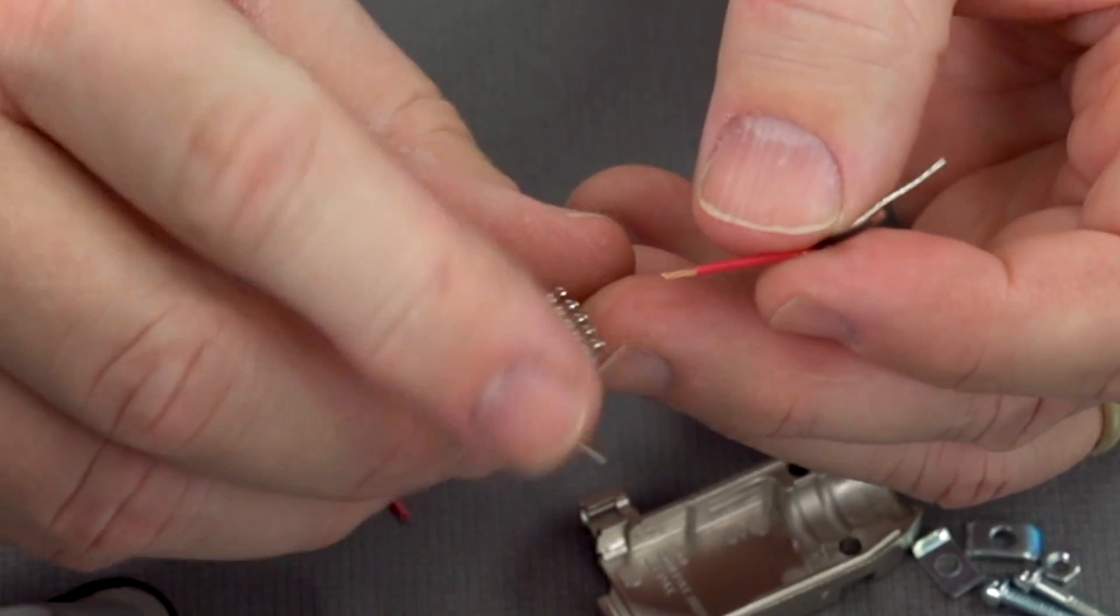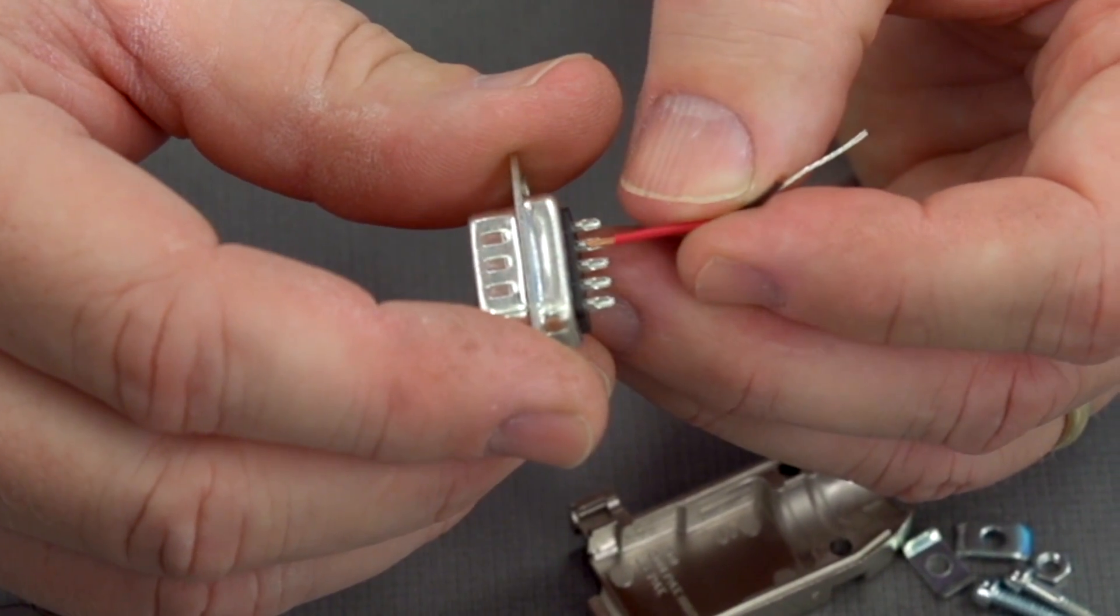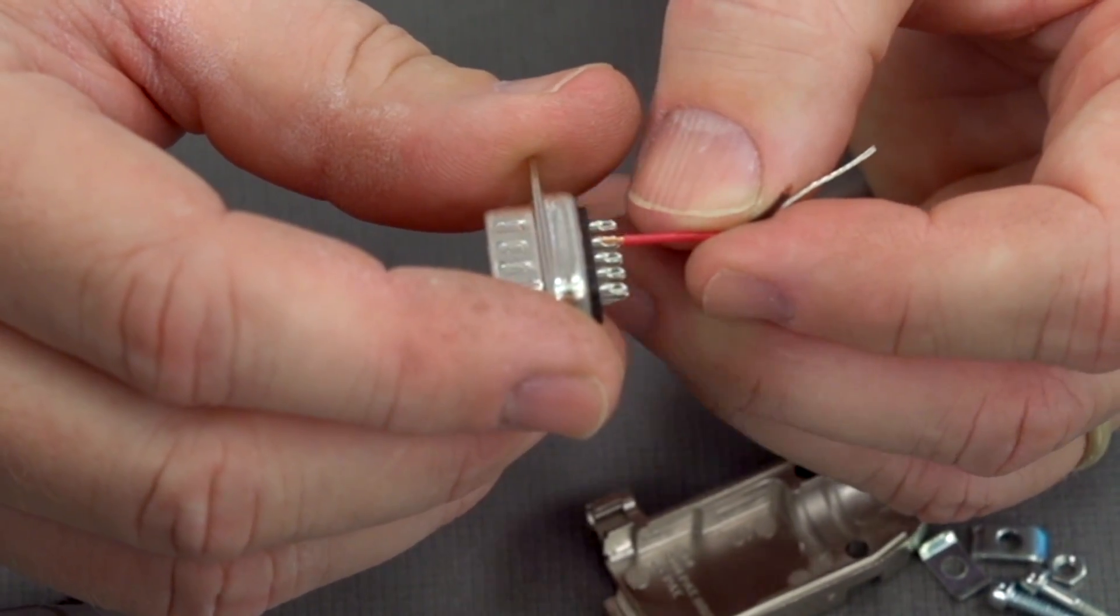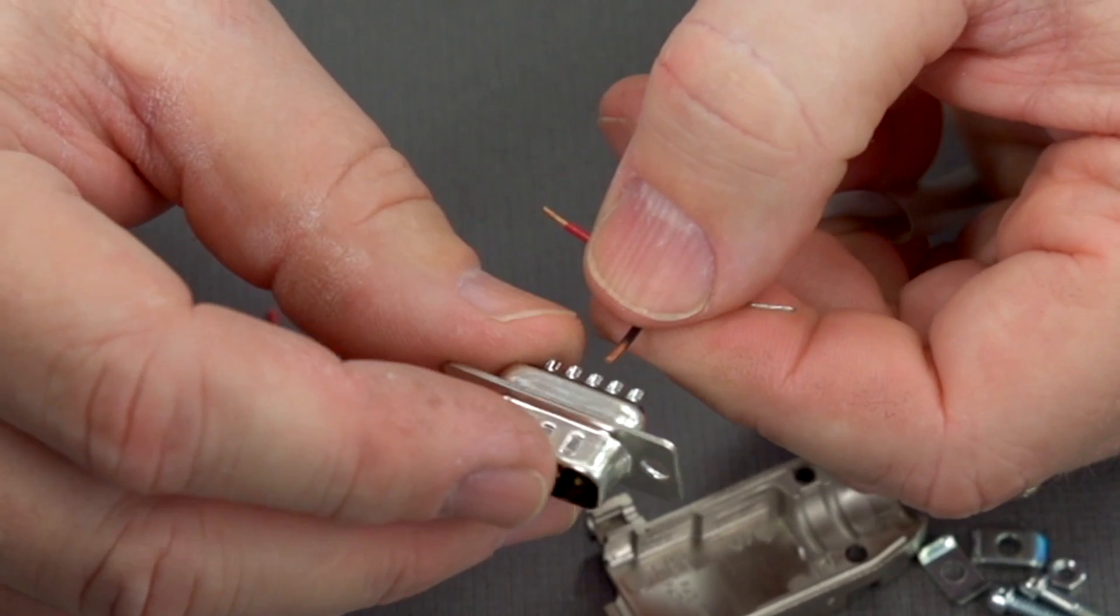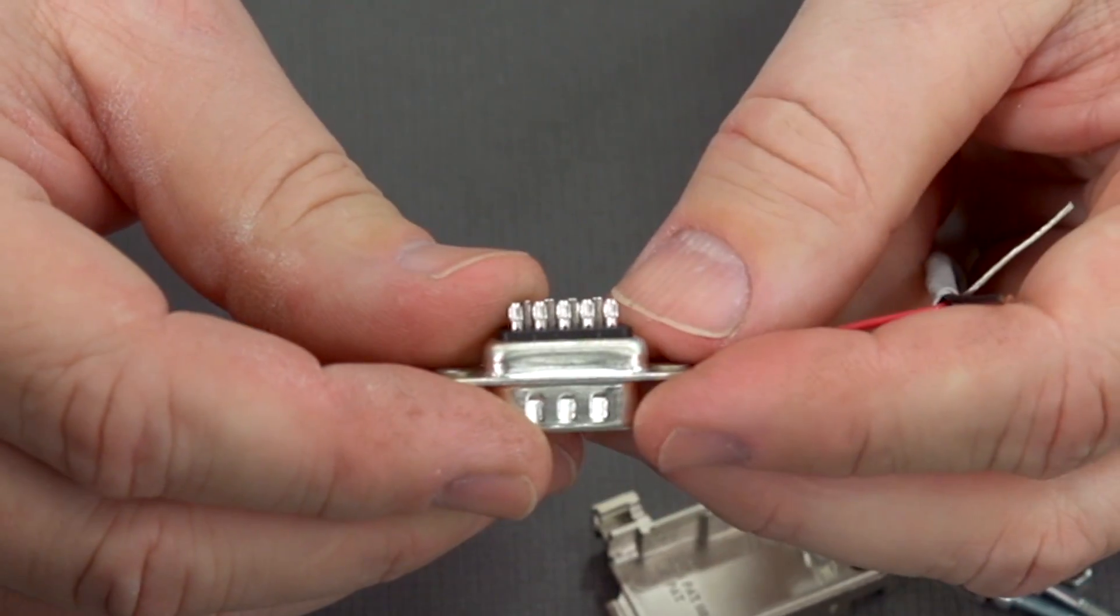Let's go ahead and begin removing some of the outer jacket here. We can test fit here, pin 2, and see how far it goes into the solder cup, which is about right. Then pin 3, and then we'll do pin 5.